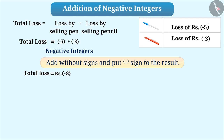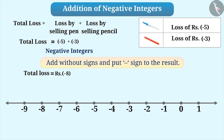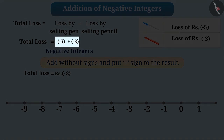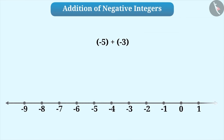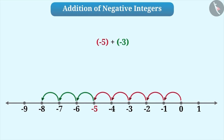Therefore, we can say that the shopkeeper faces a total loss of Rs.8. The addition of negative integers can also be represented on the number line. We will understand this with the example of -5 + -3. First, draw a number line of integers. Here, -5 is the first integer which is a negative integer. Therefore, we move 5 places to the left of 0, and by doing so, we reach -5. Now, the second integer is -3. Since it is a negative integer, we move 3 places to the left of -5 and we reach -8, which is the result of -5 + -3.